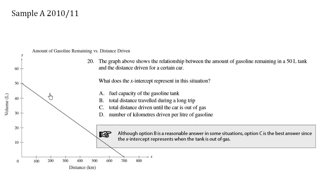The graph above shows the relationship between the amount of gasoline remaining in a 50 liter tank and the distance driven for a certain car. What does the x-intercept represent in this situation?